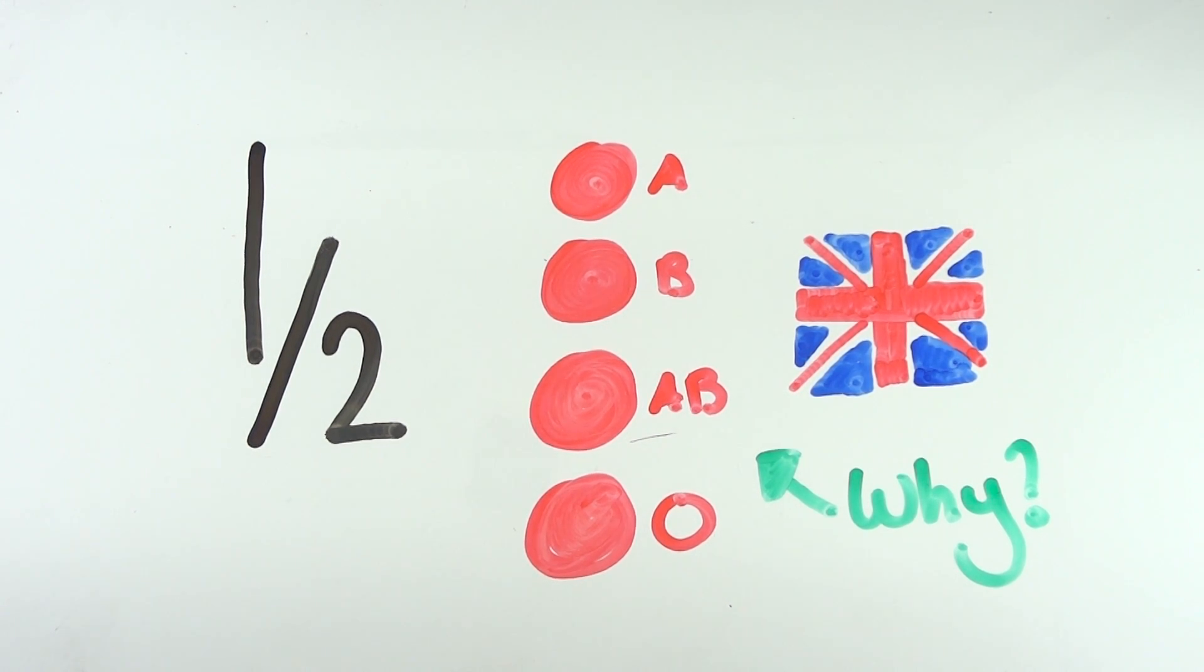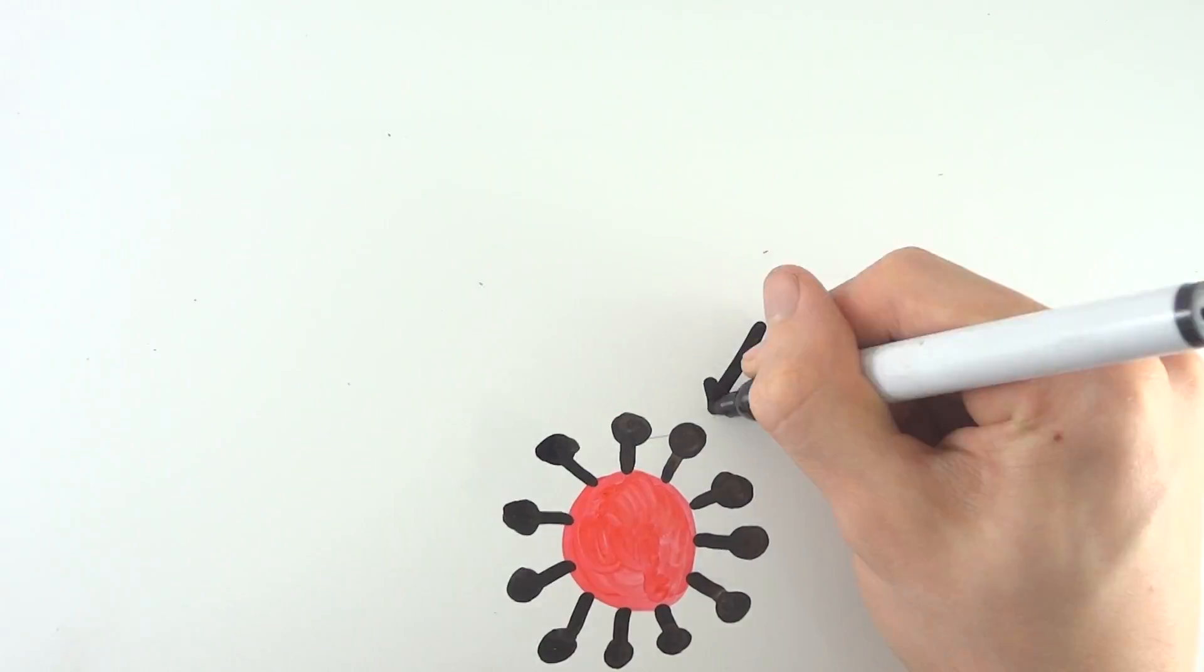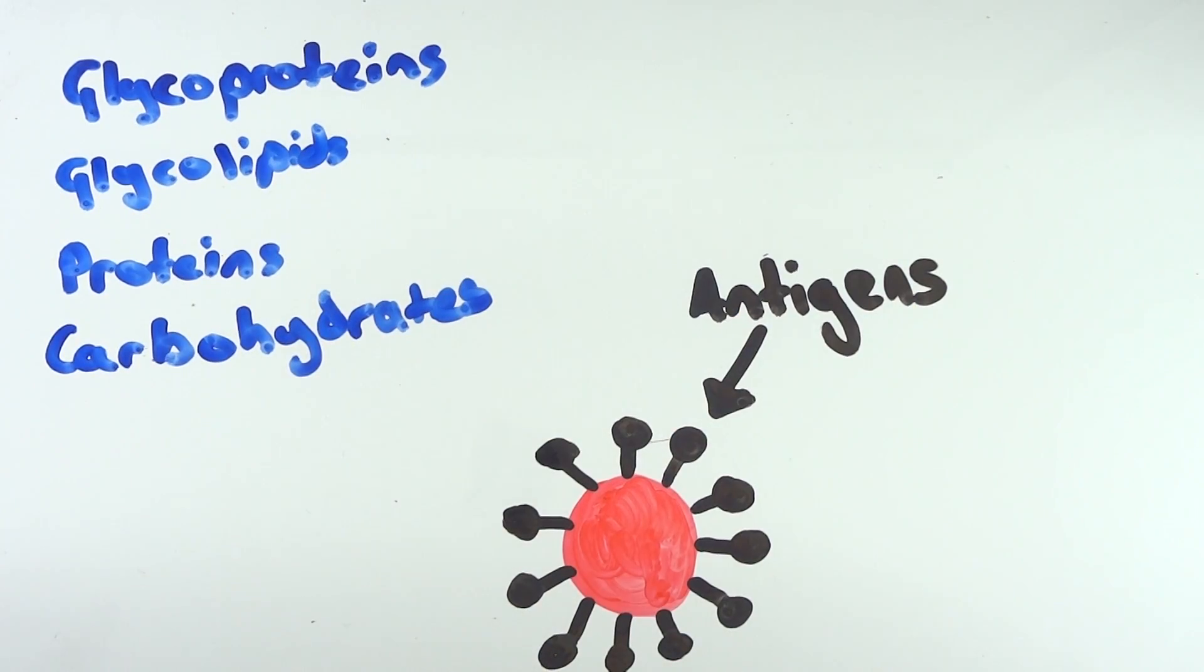Firstly, your blood group classification is based on whether or not you have specific antigens on the surface of your red blood cells.